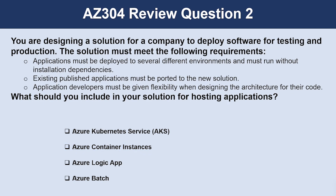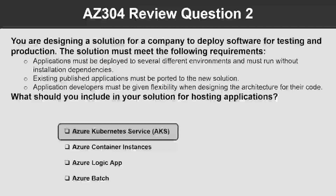Question number two. You are designing a solution for a company to deploy software for testing and production. Applications must be deployed to several different environments and must run without installation dependencies. Existing published applications must be ported to the new solution, and application developers must be given flexibility when designing the architecture for their code. What should you include in your solution for hosting applications? The correct answer is Azure Kubernetes Service. AKS provides a managed container service that gives architectural flexibility to the development team.